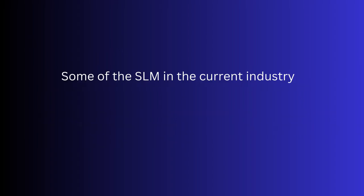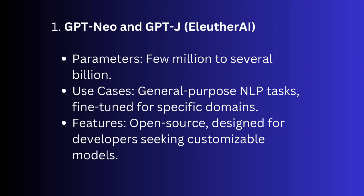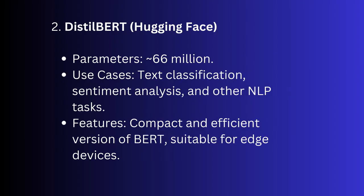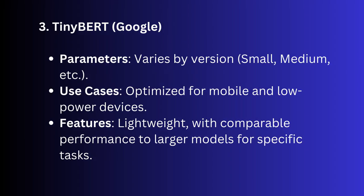Now let's look at some SLMs currently available. First are GPT-NEO and GPT-J, with parameters ranging from a few million to several billion, used for general-purpose NLP tasks and fine-tuning for specific domains. Next is DistilBERT from Hugging Face, with 66 million parameters, used for text classification, sentiment analysis, and other NLP tasks. Then there is TinyBERT from Google, with parameters that vary by version, optimized for mobile and low-power devices.